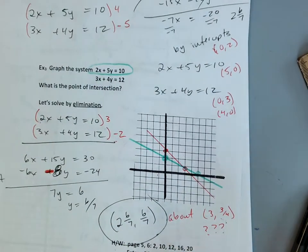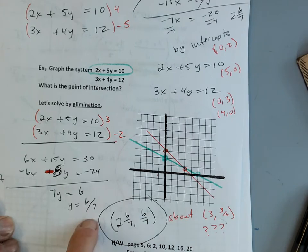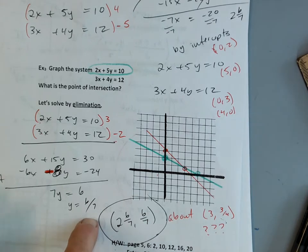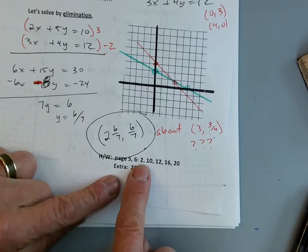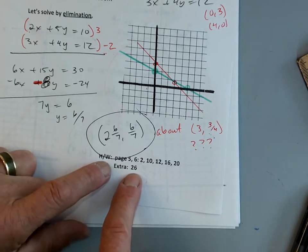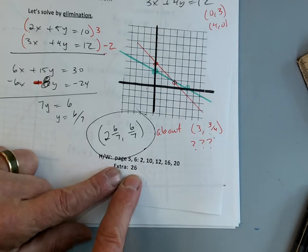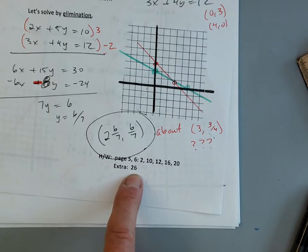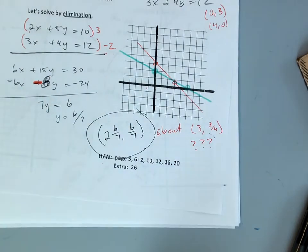My true answer is (2 and 6 sevenths, 6 sevenths). Graphing and guessing is close sometimes, but if you need the exact answer you do elimination and you can always get it. For homework today, you have your worksheet — number 20 is the extra credit. If you do everything including the extra, it's a 5 out of 5.